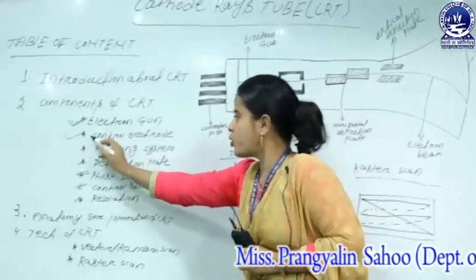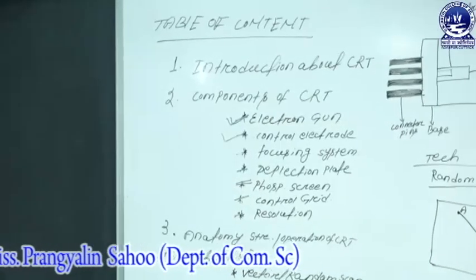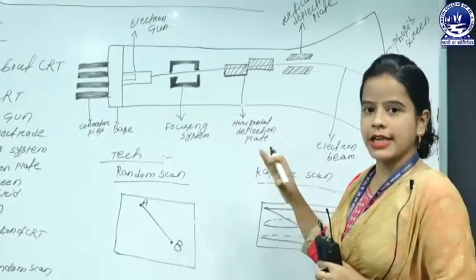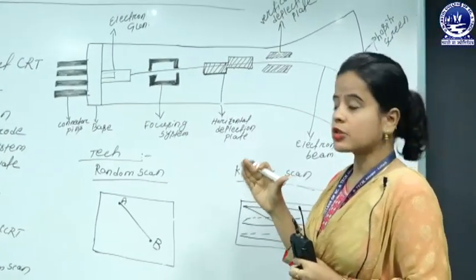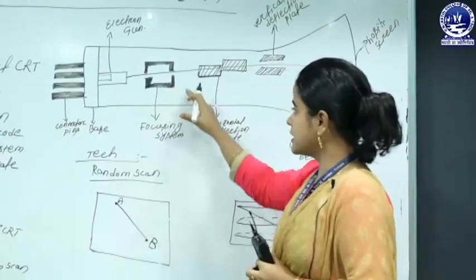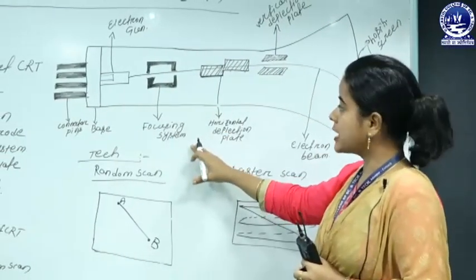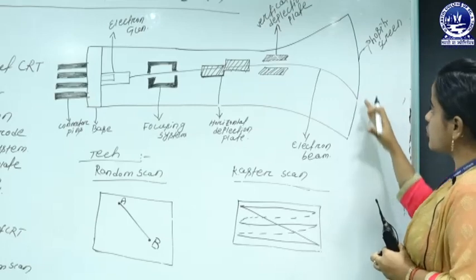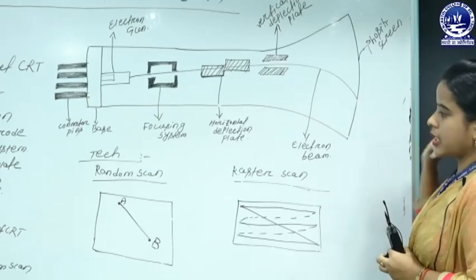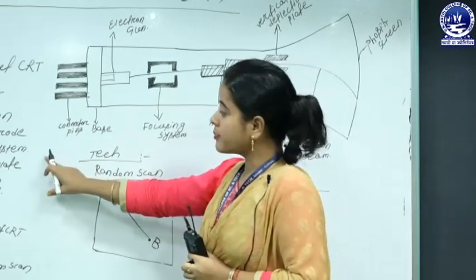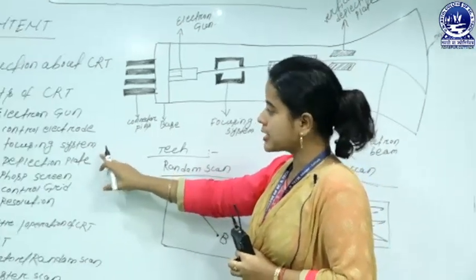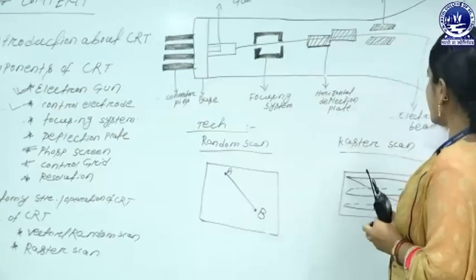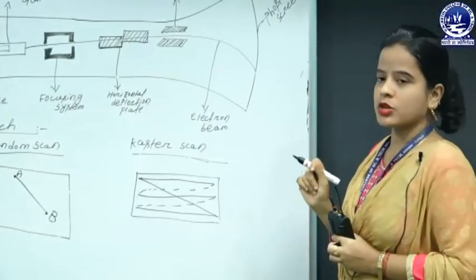Now going to the next concept — that is your focusing system. The focusing system is generally used whenever we need to view all pictures in a clear format. When electrons are processed on the focusing system, it checks how all the pixel points accurately flow on the screen, and the picture is normally created in a clear visual format. If the developer needs to add a high-level focusing system for high precision, that is also possible in case of cathode ray tubes.